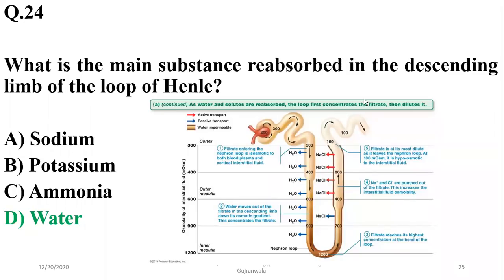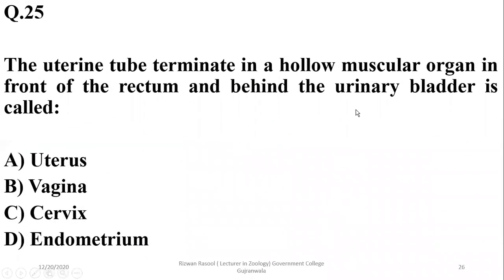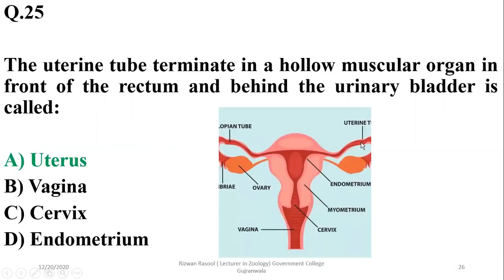Question 25: The uterine tube terminates in a hollow muscular organ in front of the rectum — that is the uterus. So the right option is A.